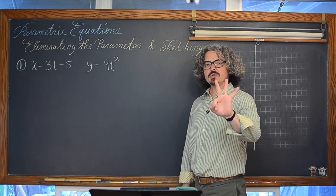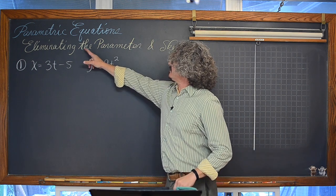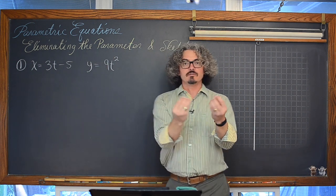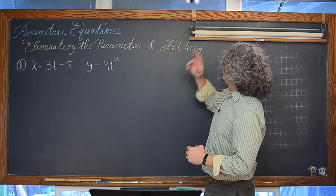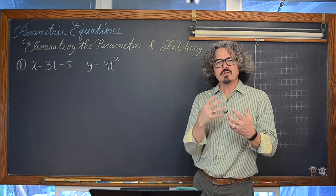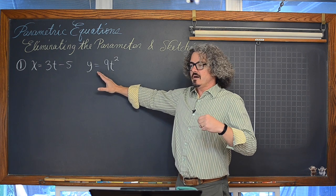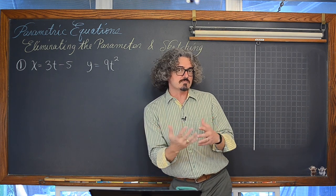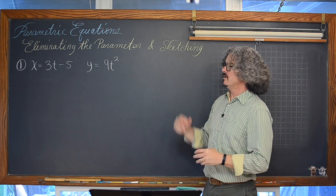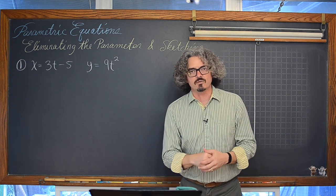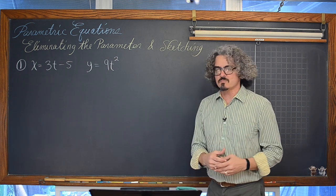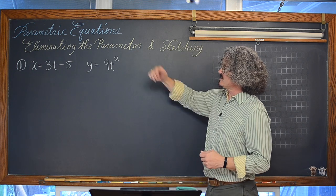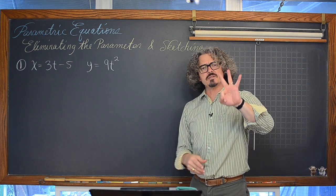In this video we are going to be doing three examples where we eliminate the parameter in a system of parametric equations, thus converting it into rectangular form and then sketching. We are going to be looking at the sketches of a graph that we get from a system of parametric equations, highlighting the difference between the graph of an equation in rectangular form and how it differs from a graph created from a system of parametric equations.